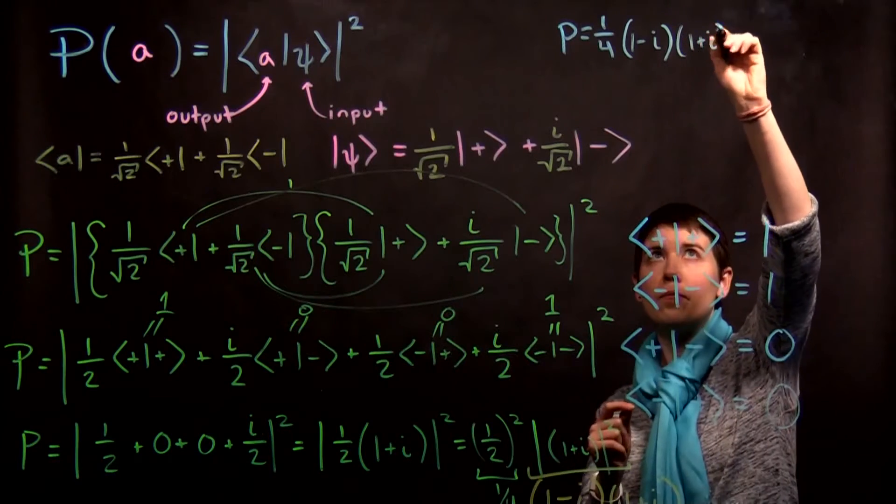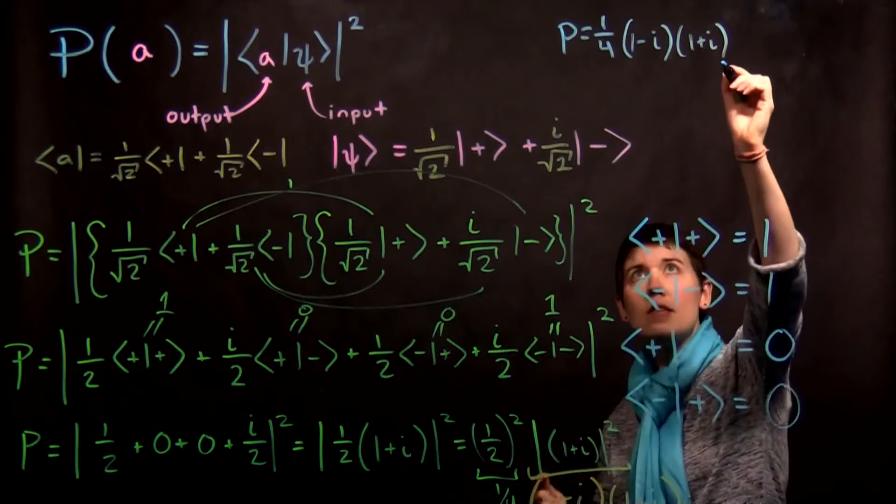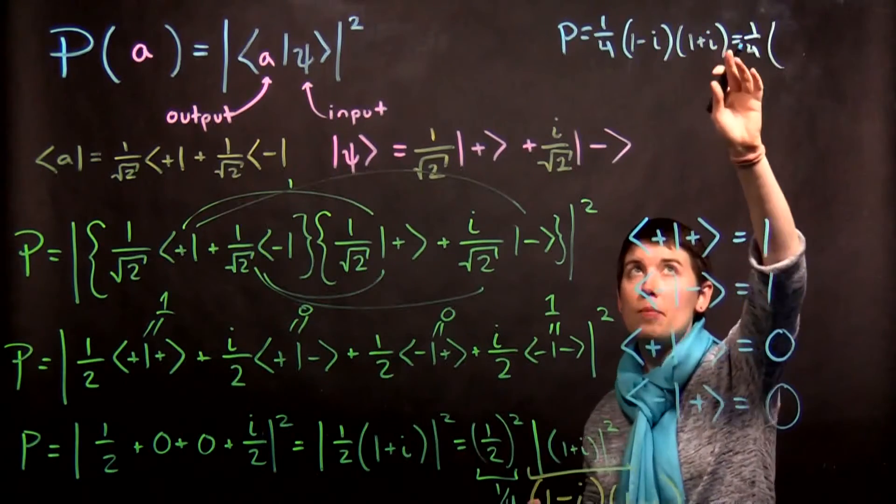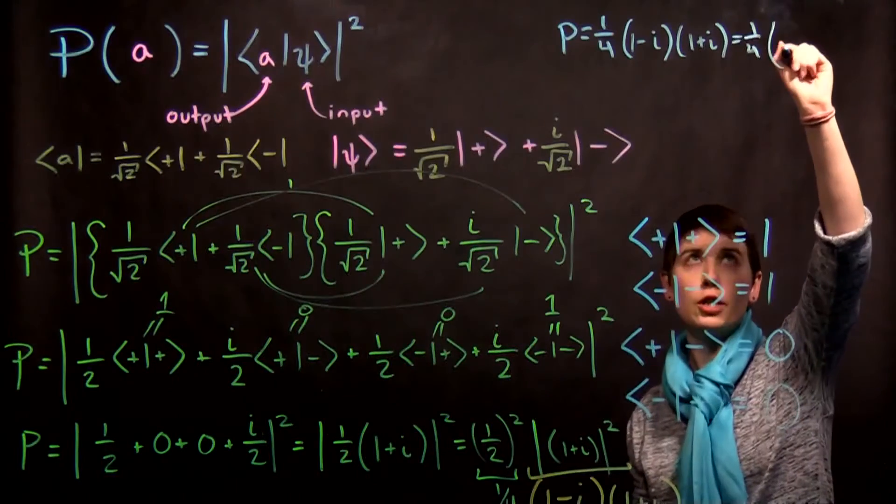So in this case then, we again can think about foiling this out. We have four terms.